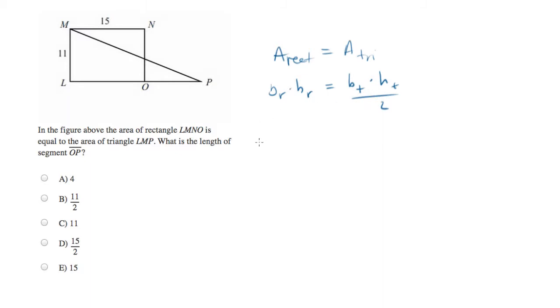Now let's start out with the rectangle. The rectangle has an 11 on one side and a 15 on the other. So let's multiply 11 times 15. The triangle has a base of 11, a height that's unknown, divided by 2.